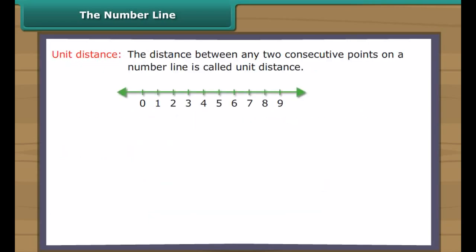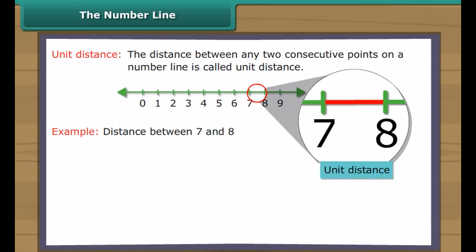The distance between any two consecutive points on a number line is called unit distance. Out of two whole numbers, greater number comes on the right of other number on the number line.